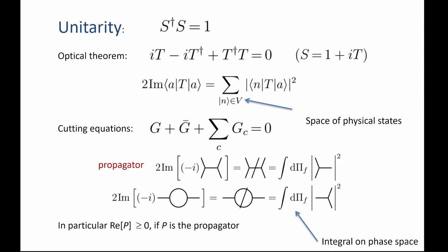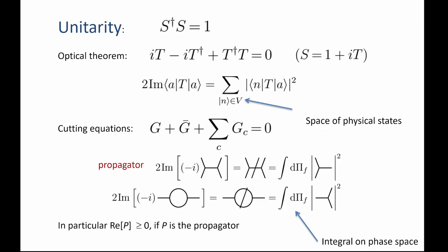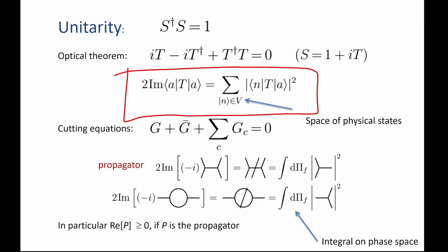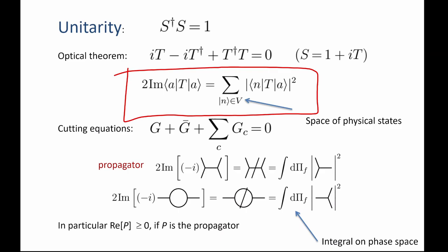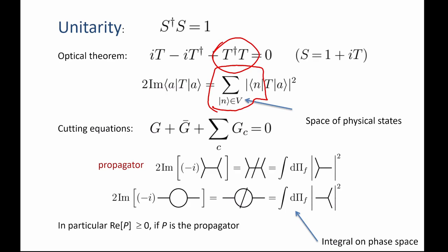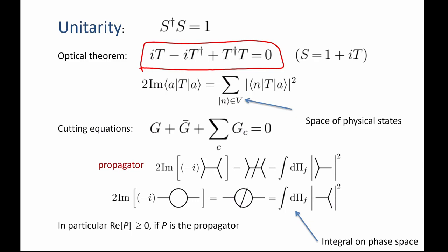Let me begin by introducing faicons. The crucial notion is unitarity. Unitarity is the statement that the S-matrix is unitary. If you write S as 1 plus iT, you can express it by means of the optical theorem. Using states of the physical space, you get the identity that the imaginary part of the forward scattering amplitude equals the cross-section for production of all intermediate states. This equation is not linear, it is quadratic, and you have a contraction in the middle — the completeness relation.